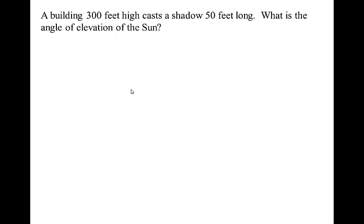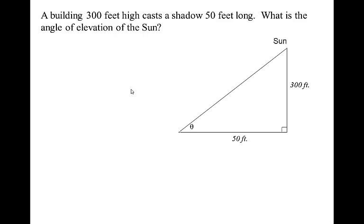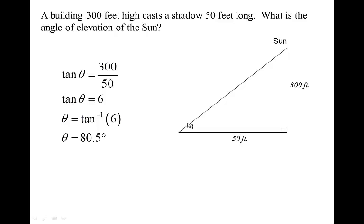A building is 300 feet high and casts a shadow 50 feet long. What's the angle of elevation of the sun? Whenever you're looking for an angle, you're always going to do inverse something. The building is 300 feet high, the shadow is 50 feet long — tangent is opposite over adjacent, so we do inverse tangent of 300 over 50, which is inverse tangent of 6, and we end up with about 80.5 degrees. Whenever you're looking for an angle, you're going to do inverse something.